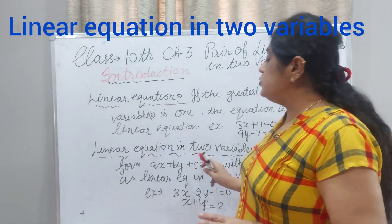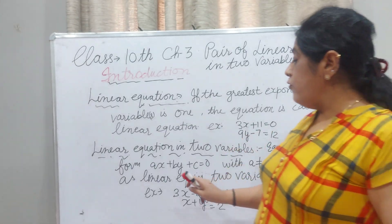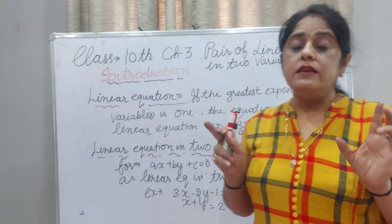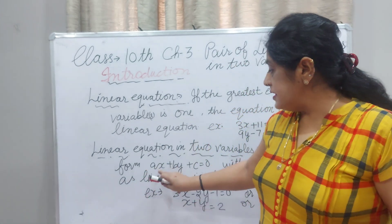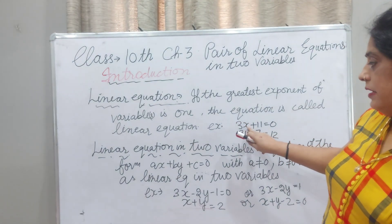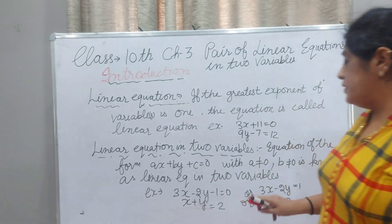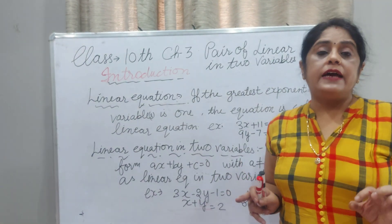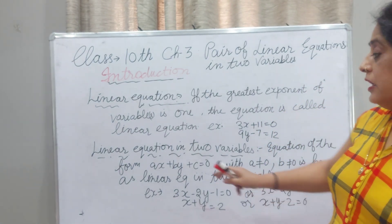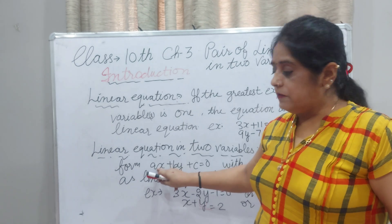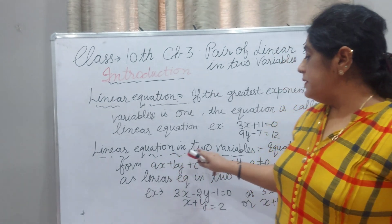Now, linear equation in two variables. An equation in the form AX + BY + C = 0. Here two variables should be there: X and Y. C is a constant. The condition is that A should not be 0 and B should not be 0. If A is 0, then X multiplied by 0 is 0. If B is also 0, it becomes a linear equation in two variables only when both A and B are non-zero.